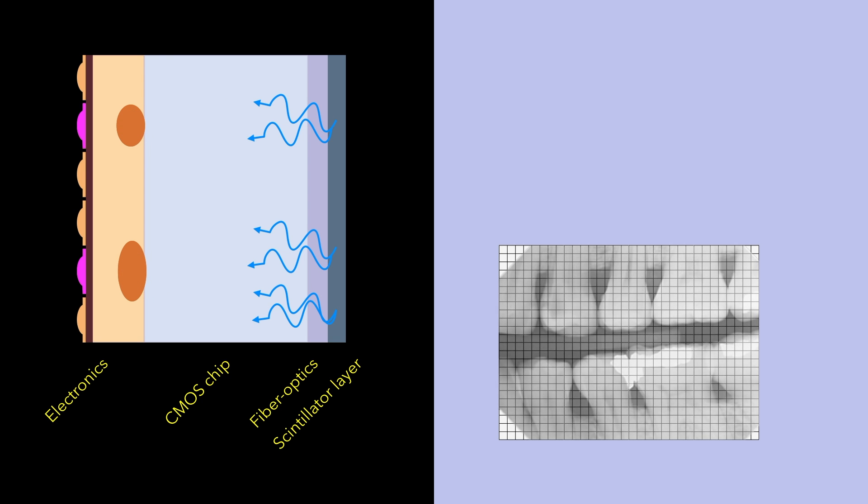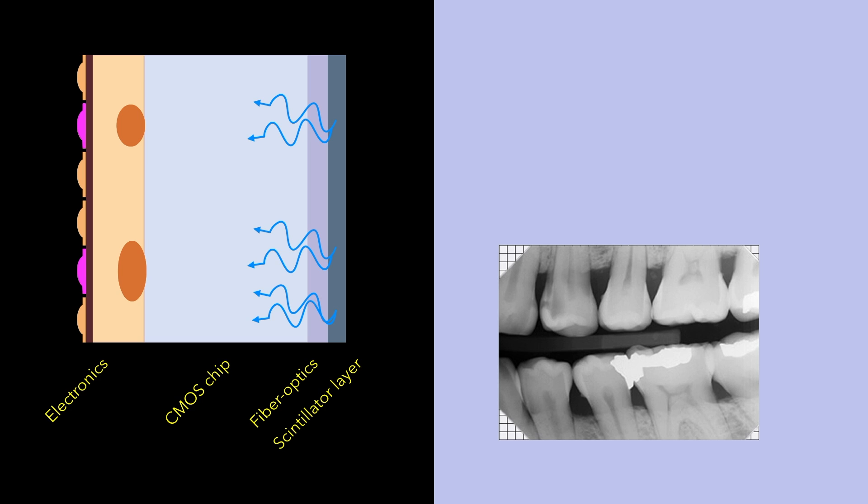So to summarize the process: X-ray photons strike the scintillation layer, producing light photons. The light photons interact with the semiconductor chip to produce electrons. The electrons then accumulate to form charged packets, creating a measurable voltage and a signal for image production.